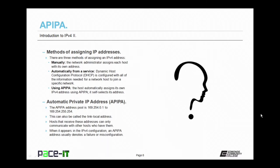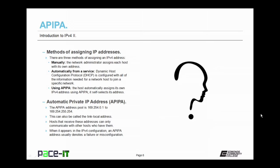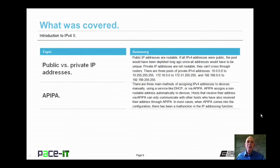The APIPA address pool ranges from 169.254.0.1 up through 169.254.255.254. The APIPA address can also be called a link-local address. Hosts that receive these addresses can only communicate with other hosts that also have APIPA addresses. When an APIPA configuration appears in IPv4, that usually denotes a failure or a misconfiguration — either a failure of your DHCP service, or a misconfiguration that caused two hosts to have the same IPv4 address. In that case, the second host to join the network will assign itself an APIPA address.